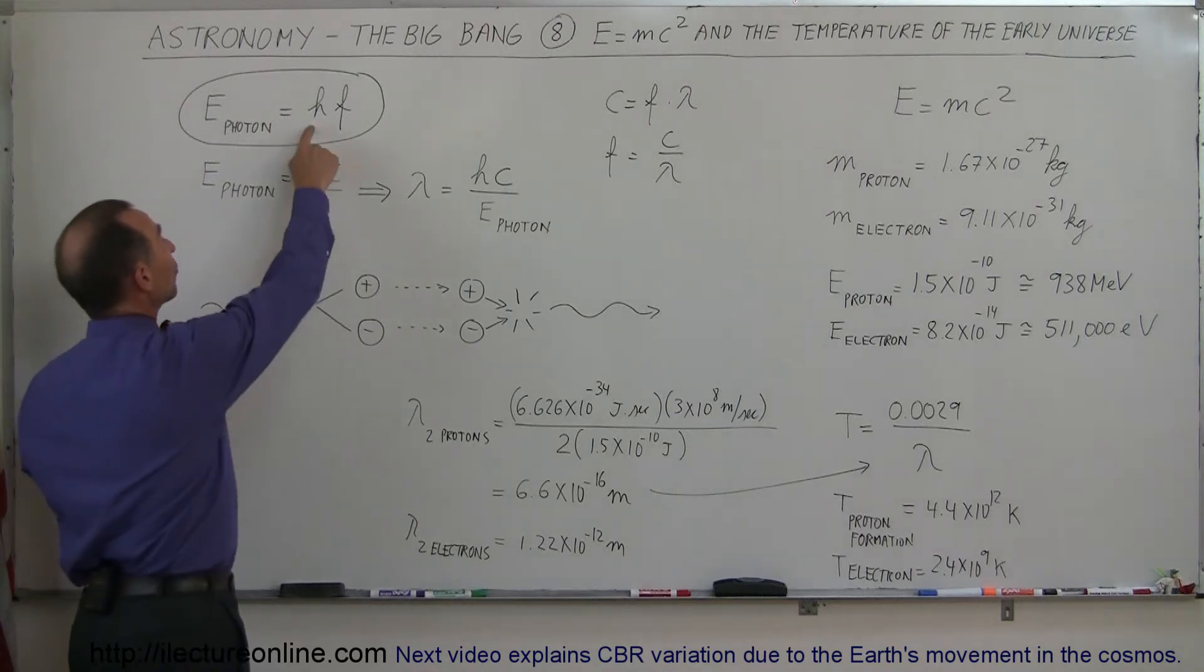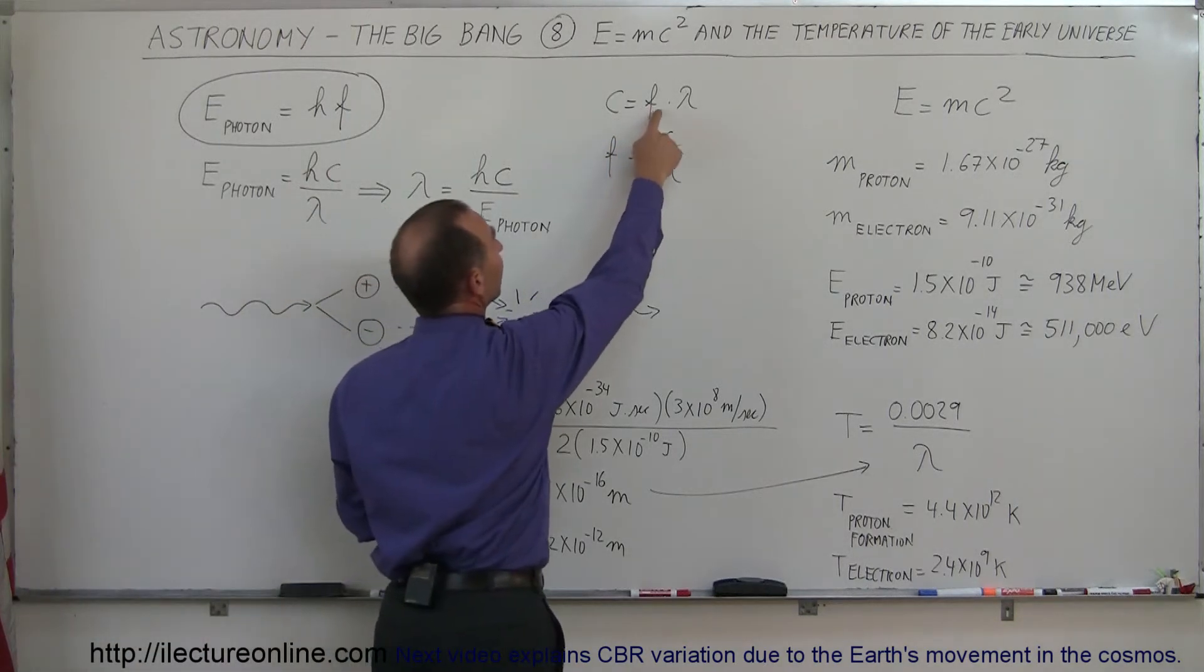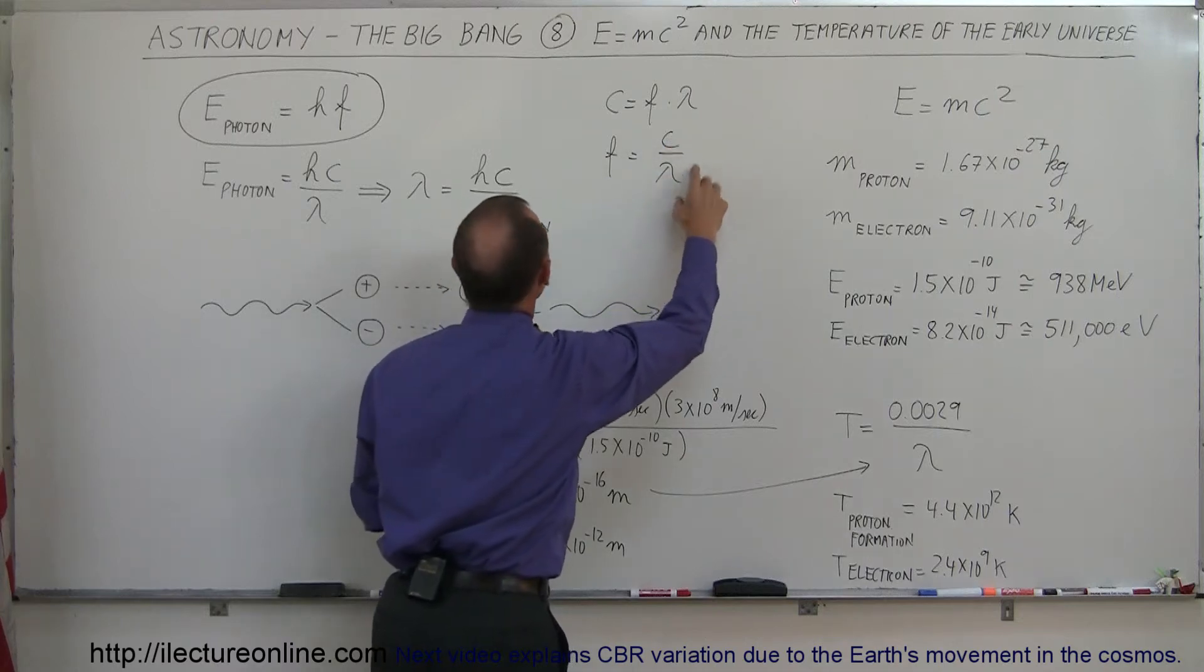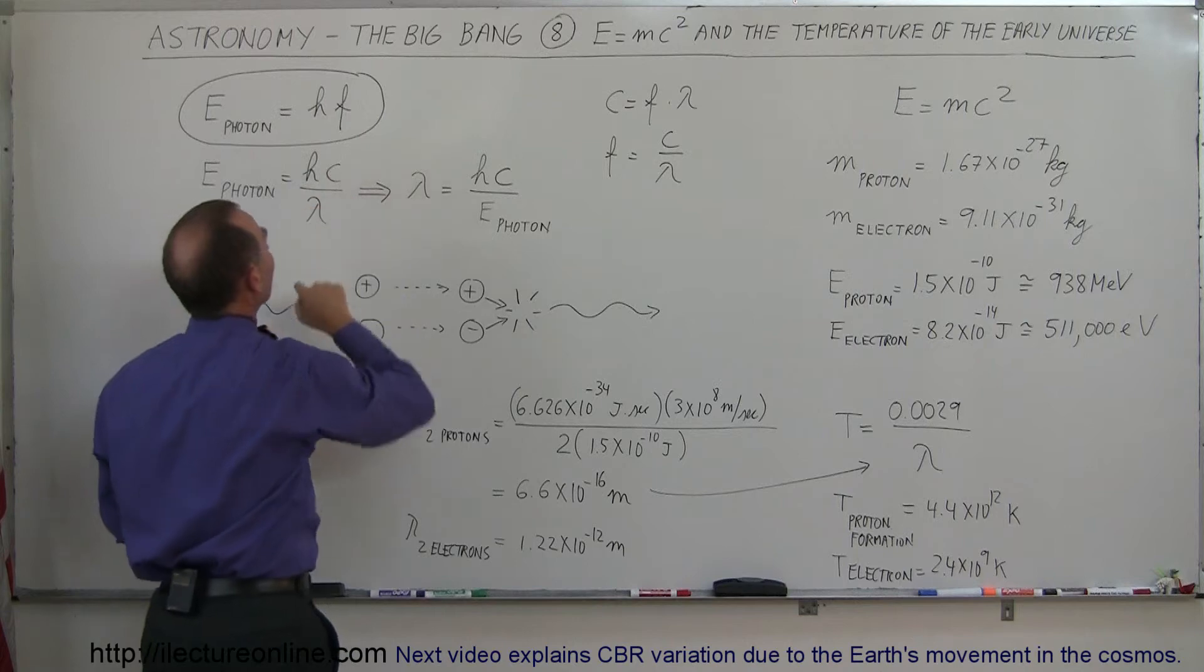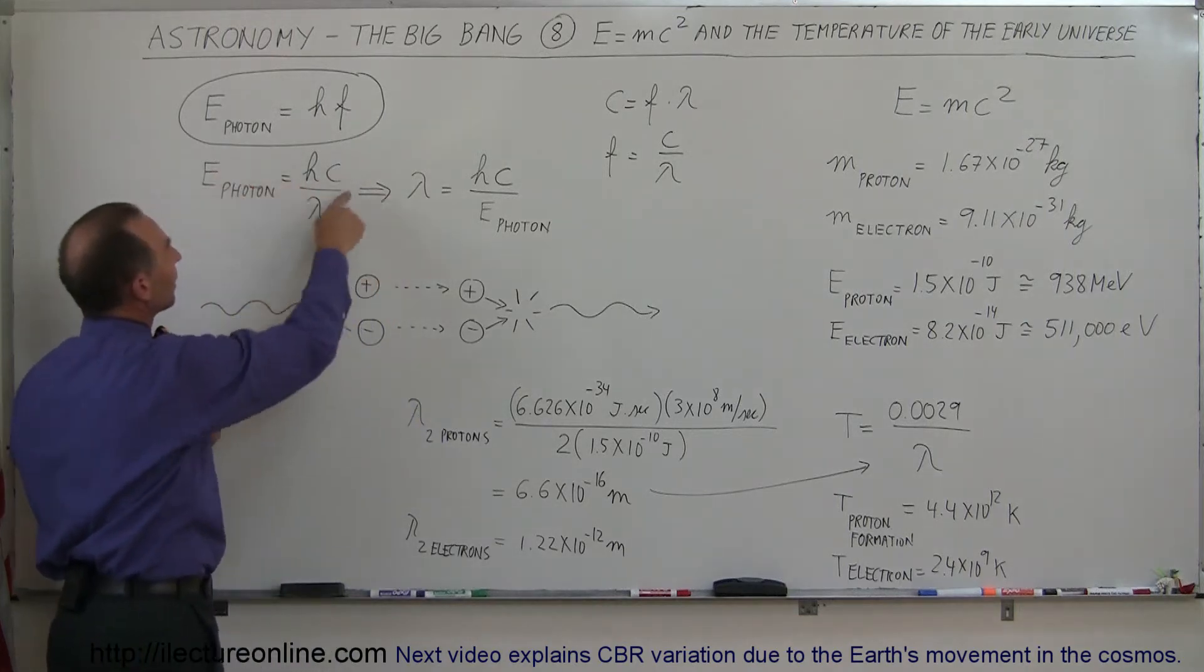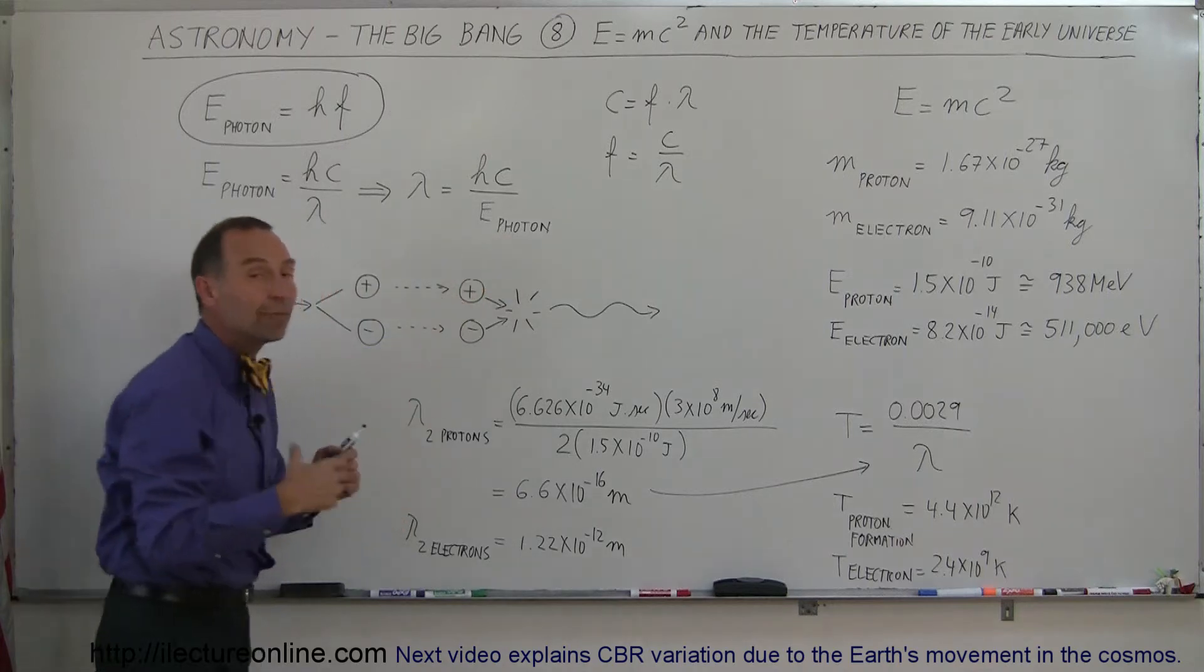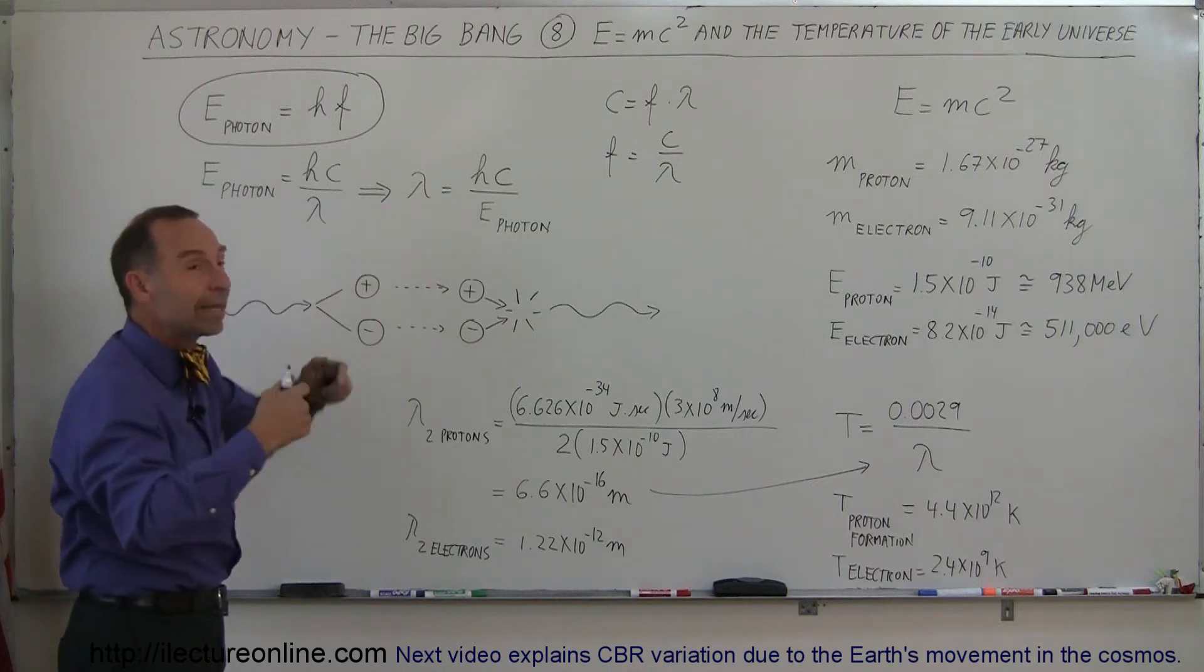We can also express the energy in terms of its wavelength because we know that the speed of light is equal to the frequency times the wavelength, so the frequency can be expressed as the speed of light divided by the wavelength. If we plug that in here instead of f, we then have hc over lambda. And if we then take this equation and solve for the wavelength, for the energy needed to make that matter, we can see what the wavelength of the energy had to be in order for it to make matter.